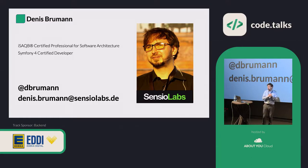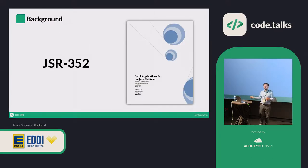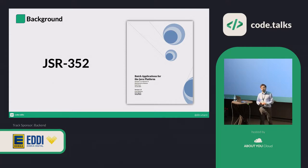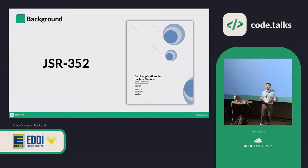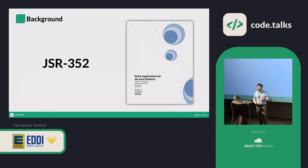Most of the stuff I will tell you is basically not my idea — it's taken from the Java Specification Request 352, Batch Applications for the Java Platform. This is a 120-something page guide that defines how you can write batch programs in a reusable way. The Java folks implemented this as the Spring Batch component, and I took inspiration from that — it's not an exact implementation, but I'll show where that inspiration came through.